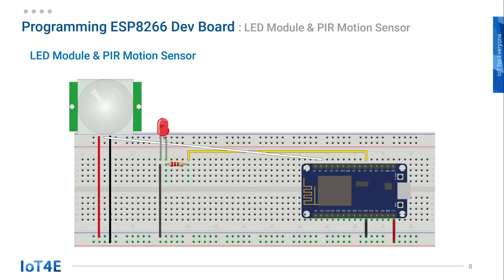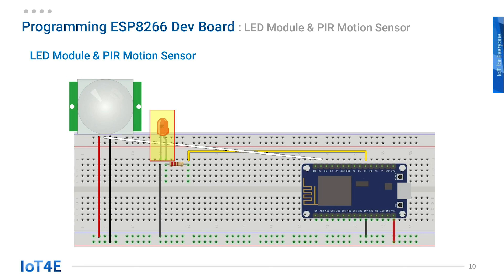This is the schematics for this lesson. There is a PIR motion sensor module, an LED module, and a 220 ohm resistor. This is just a combination of the LED and motion detection program we wrote before.